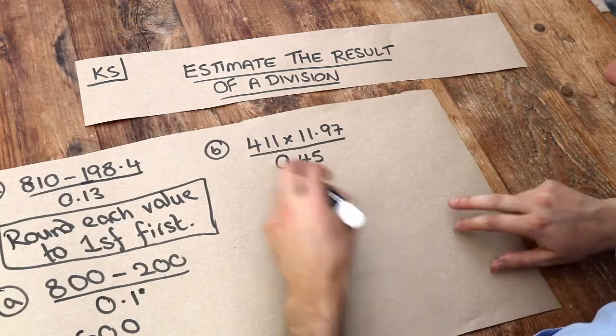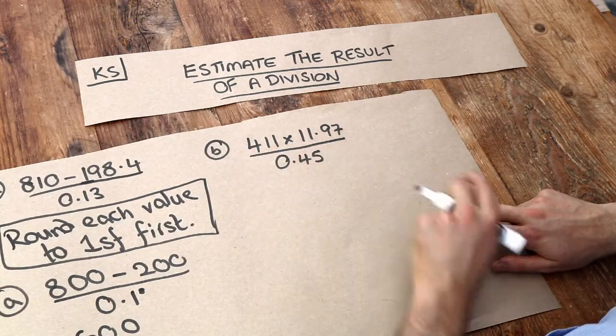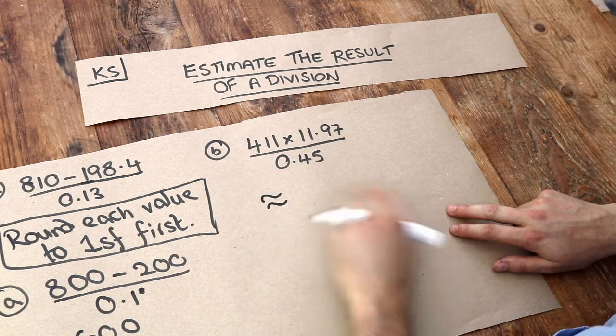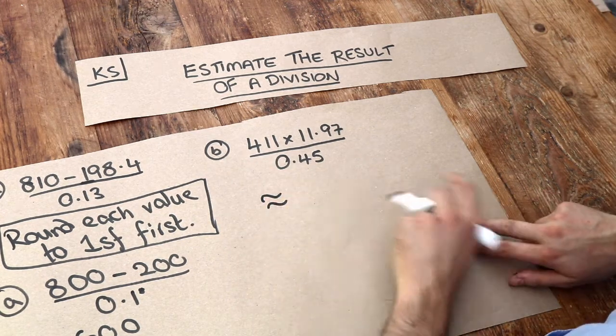Now what about the second question? Again, we round each of these numbers to one significant figure. And by the way, this symbol here means approximately equal to, so you can use that symbol if you want.